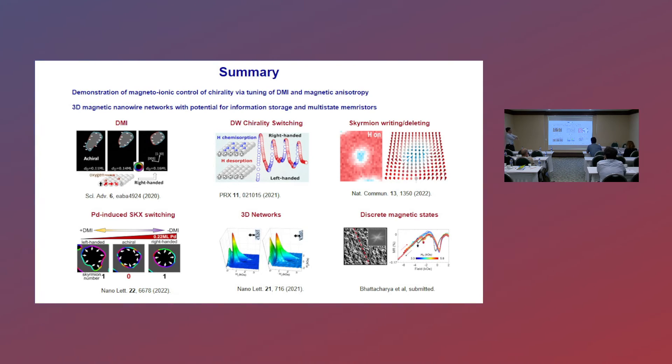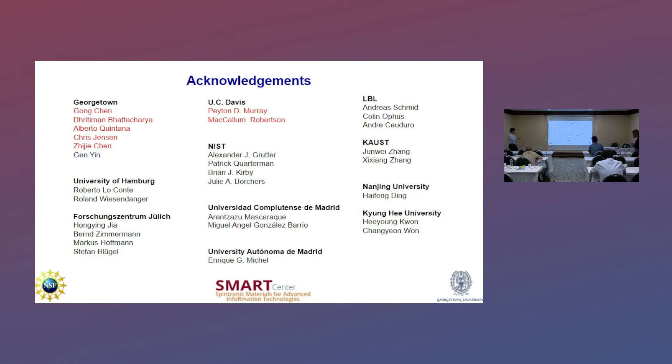So with that, let me summarize. We've shown a number of magneto-ionic functionalities, particularly by controlling DMI and magnetic anisotropy, which allow us to manipulate skyrmions and chiral domain walls. And then there are some potentials for 3D magnetic nanowire networks. Then finally, the people who really did the work, much of the work I discussed was led by Gong Chen, along with Chitman Bhattacharya and my other students, my colleague at Georgetown, a former student, Peter Mary and Mac Roberts, current student, Mac Robertson at UC Davis, my great collaborators, Andrea Smith's group at LBL, Professor Roland Wiesendanger's group at Hamburg, Stefan Blügel's group at Jülich, who did a DFT calculations, Alex Skrute, Julie Borcher's group at NIST for a neutron study, Xixiang Zhang's group at KAUST for imaging, along with other colleagues at the Complutense, Autonomous University of Madrid, Nanjing, and the Guangxi University. With that, I'll stop here. Thank you very much.